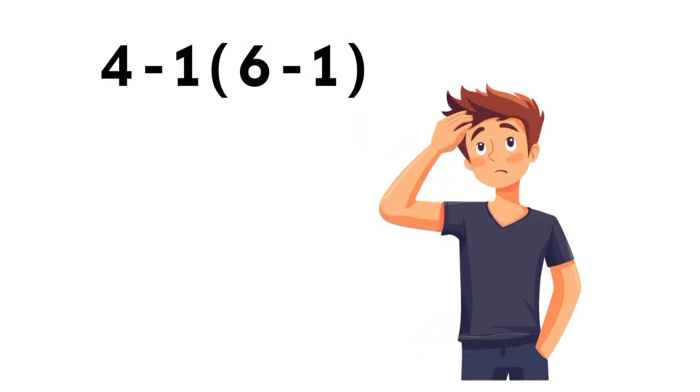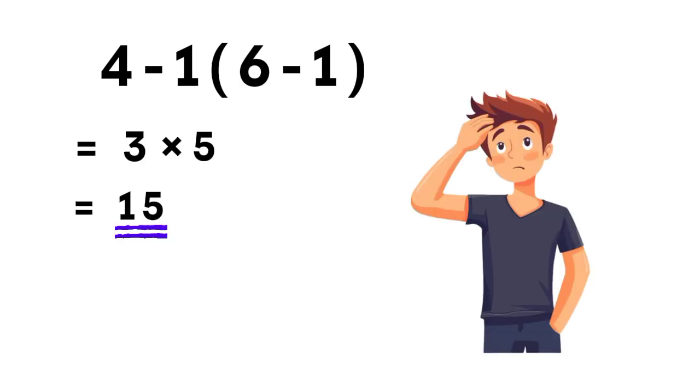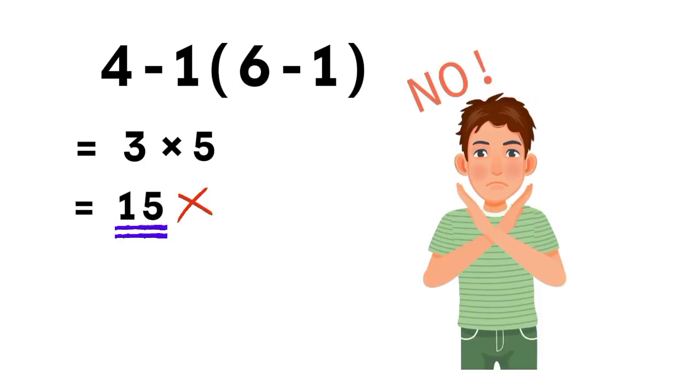Now at first glance, you might quickly say, okay, 4-1 gives me 3, and 6-1 gives me 5, so that must be 3 times 5, 15. And honestly, that seems reasonable, but that answer is not correct.